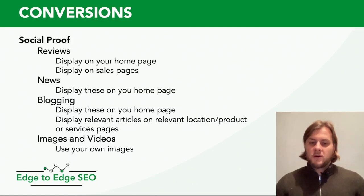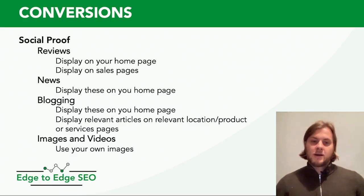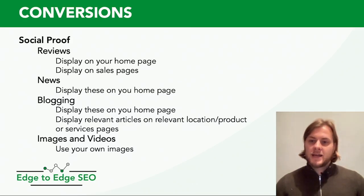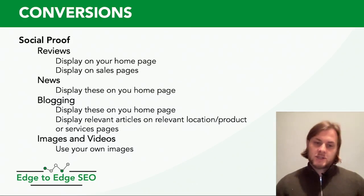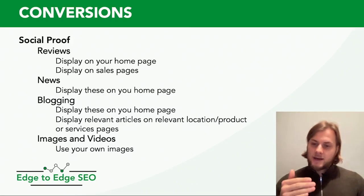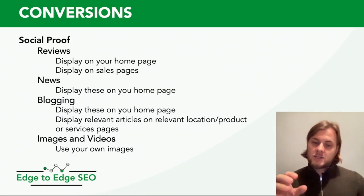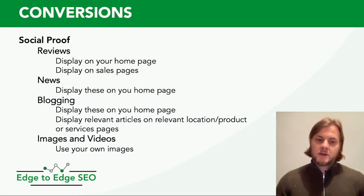Whatever services you offer, you should really be writing about them and showing that you're the expert in that market. For example, if you're purely a carpet company, you should know everything about carpeting — how it's fitted, maintained, the different types, styles, and brands — and write regular content about these products. This content should be displayed on your home page and on all relevant pages. If you write a lot of articles about carpet, display those on the carpet page to make it more relevant and show visitors you know what you're talking about.